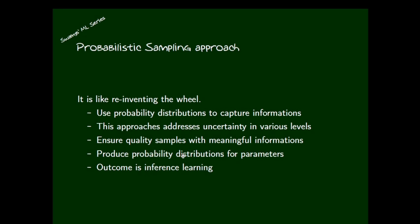One wonderful application of these sampling algorithms is ensuring quality of samples with meaningful information. When we apply probabilistic sampling algorithms, we can pick only qualified samples, which ensures quality in our research. Another point is that the probabilistic sampling approach produces probability distributions for parameters. Finally, when we apply the probabilistic sampling approach, the outcome is inference learning — instead of focusing on fixed values, we focus on probability distributions of parameters.